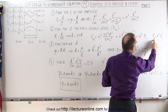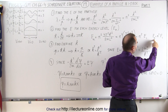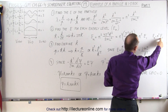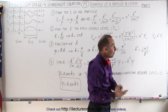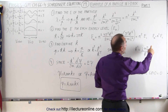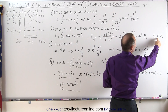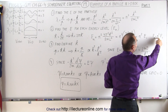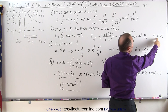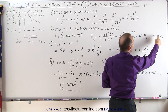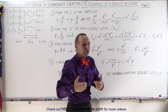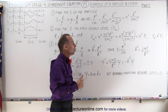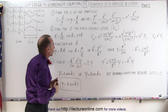For n equals 1, we have 1 squared times E1 — simply the energy of the first level. For n equals 2, we have 2 squared, which is 4 times E1. For n equals 3, we have 9 times E1. That's how you determine the energy of all the various levels.